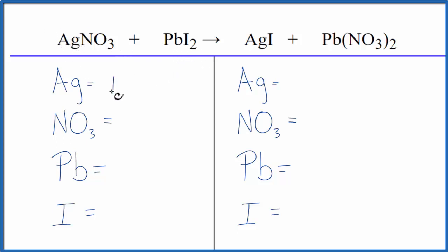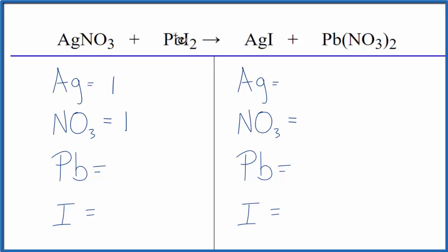Silver, we have 1. And this NO₃ is called the nitrate ion — it's a polyatomic ion. It stays together in this reaction. We have it here, and then we have it again over here. Since we have it on both sides, we're going to just count this as 1 item.